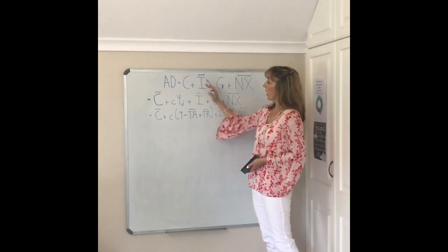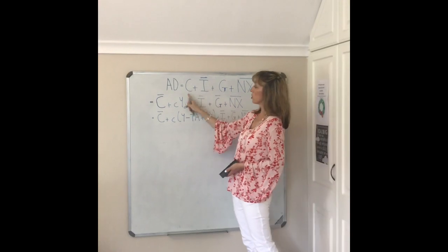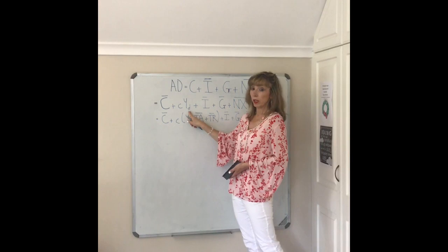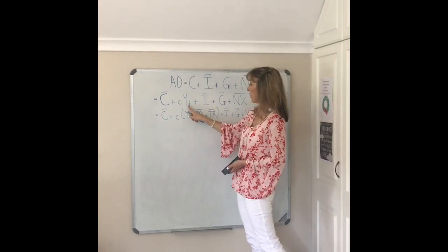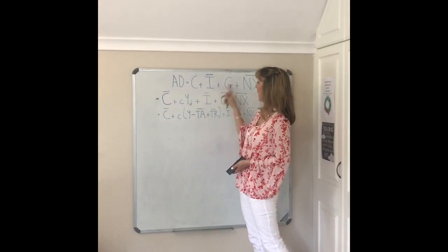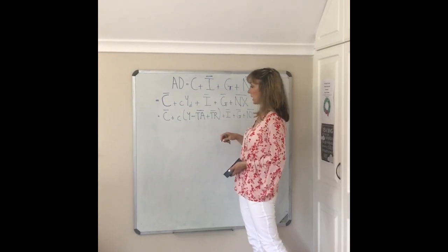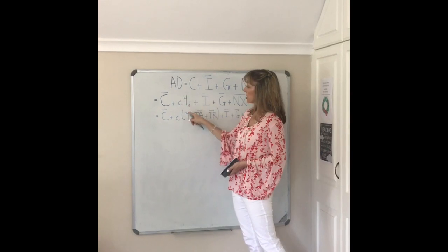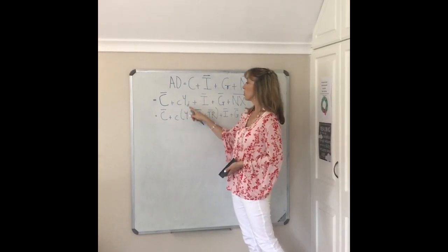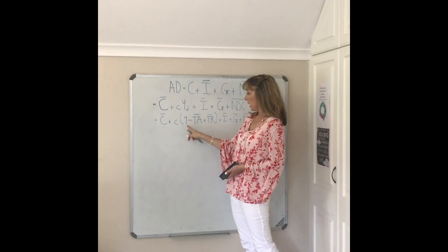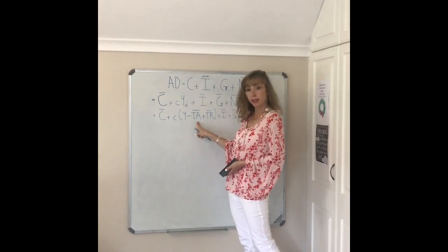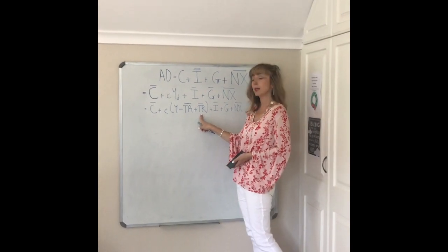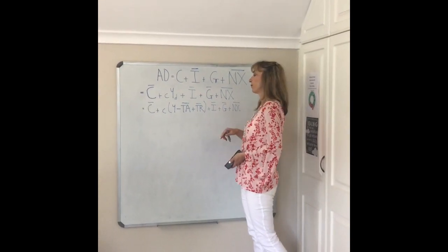We can substitute into our aggregate demand equation. We know that consumption equals autonomous consumption spending plus the marginal propensity to consume times disposable income — as opposed to normal income — then we add our other terms: investment, government spending, and net exports. So we substitute in for disposable income: it's normal income minus taxes you have to pay, plus transfer payments you may receive from government, plus the other terms.